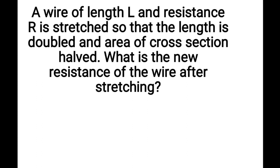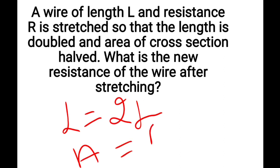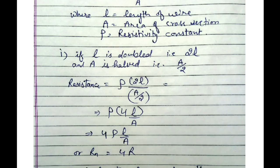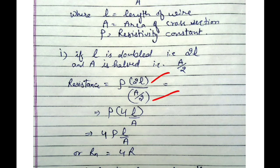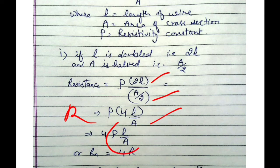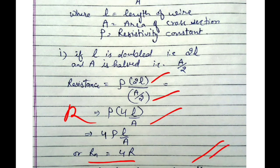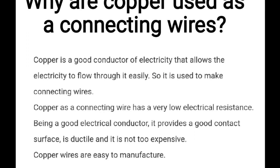Question 2: A wire is stretched so that its length is doubled — from L to 2L — and its area becomes A by 2. What is the new resistance? Using R equals rho L by A, substituting 2L and A/2: R new equals rho times 2L divided by (A/2) equals 4 rho L by A, which equals 4R. So resistance becomes four times the original.